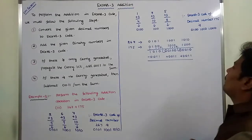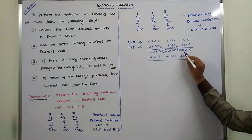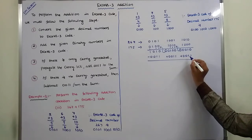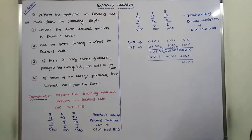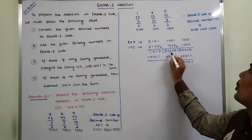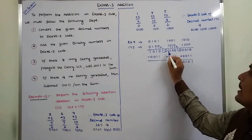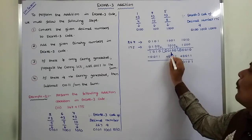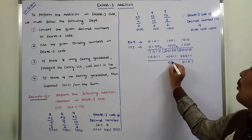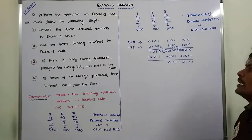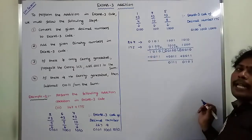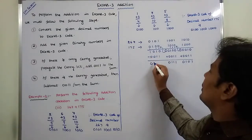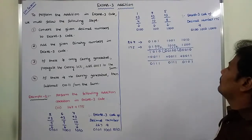Looking at the results: one group gives value 0000 which is 2 (since 2 plus 3 equals 5, binary 0101); another group gives value 4 (4 plus 3 equals 7, binary 0111); and the carry-out group gives value 10 (10 minus 3 equals 7, binary 0111). The decimal equivalents are 7, 7, and 5.